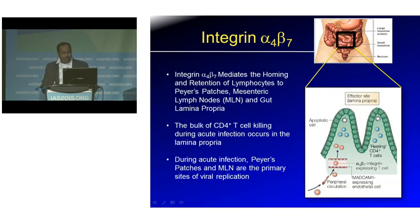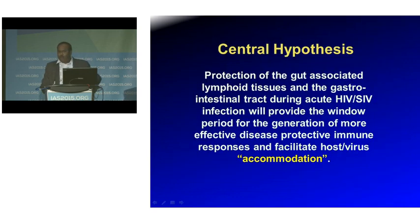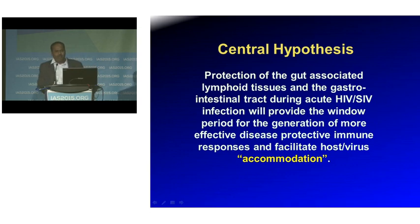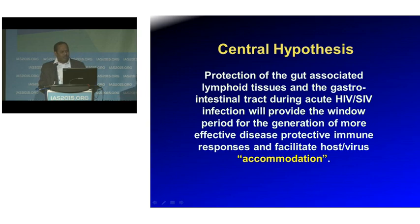Our central hypothesis is that protection of the gut-associated lymphoid tissues and the gastrointestinal tract during acute HIV infection will provide a window for the generation of more effective, protective immune responses, and we think it will facilitate a host-virus accommodation. The idea is that once the virus gets into the body, there's no way we can eliminate it, so we're thinking about therapies that allow us to live with the virus in a kind of symbiosis manner.